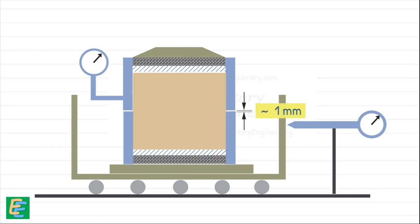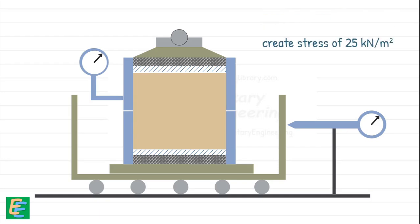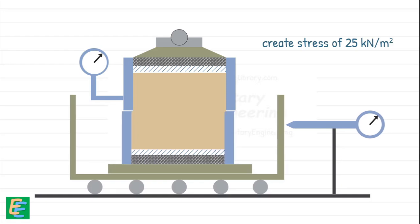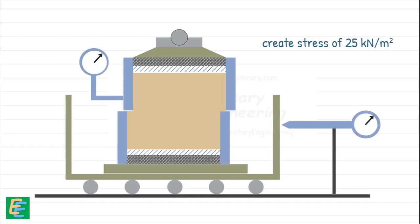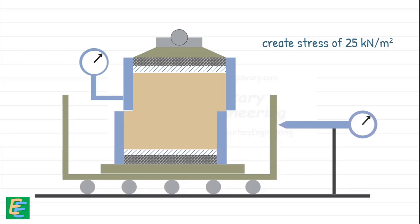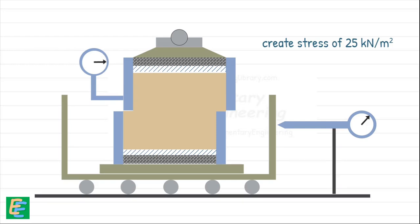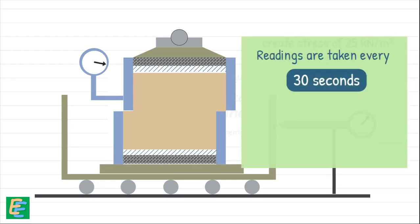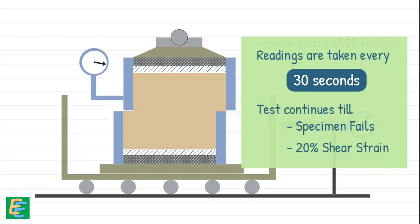Now we are ready to start the testing. First, we apply a normal load to the sample to create a normal stress of 25 kN/m². Then we apply a shear load at a constant strain rate. The sample begins to shear along the horizontal plane between the two halves. We observe the changes in the readings of the proving ring and the dial gauges, taken every 30 seconds.